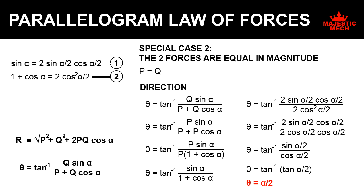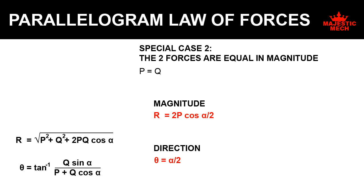In other words, theta becomes alpha/2. So in cases where the two forces are equal in magnitude, you can use these two simple formulae to calculate the magnitude and direction of the resultant force.